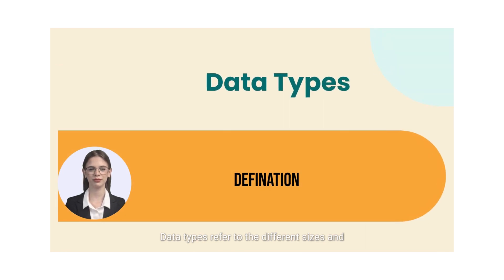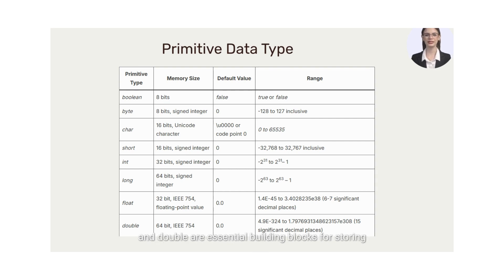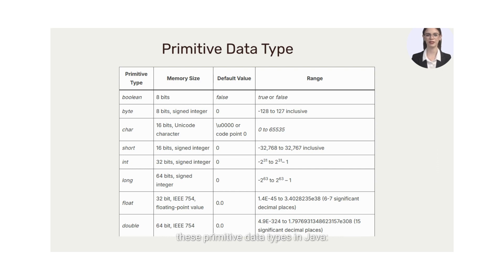Data types refer to the different sizes and values that can be stored in a variable. In Java, primitive data types like boolean, byte, character, short, int, long, float, and double are essential building blocks for storing and manipulating data. These data types are used to represent different kinds of values, such as integers, floating point numbers, and characters in a program. Below is a brief summary of each of these primitive data types in Java.